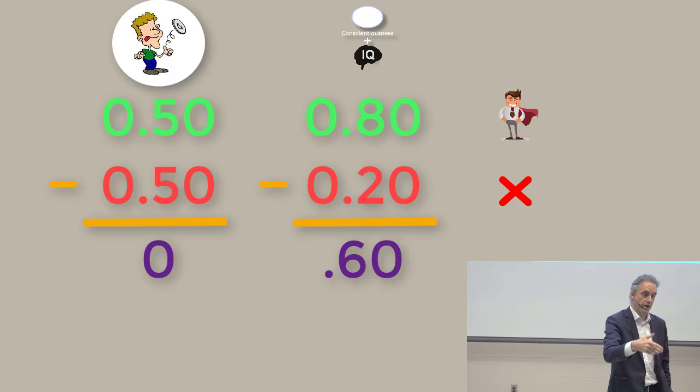So it cuts your failure rate by more than half, right? Brings it down from 0.50 to 0.20.